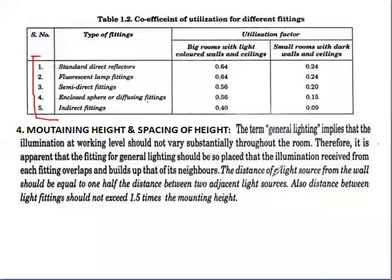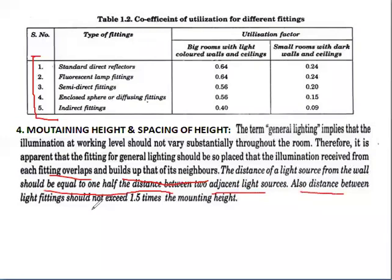Mounting height and spacing of fittings: the term 'general light' implies that the illumination at working level should not vary substantially throughout the room. Therefore, fittings for general lighting should be so placed that the illumination received from each fitting overlaps with that of its neighbors. The distance of the light source from a wall should be equal to one-half of the distance between two adjacent light sources. Also, the distance between light fittings should not exceed 1.5 times the mounting height.